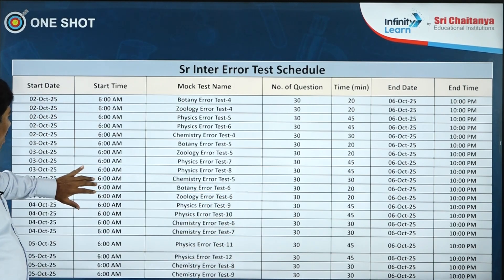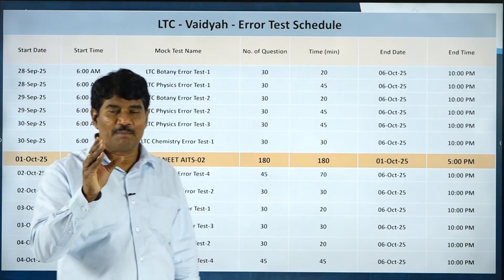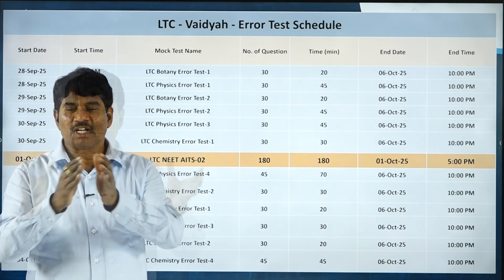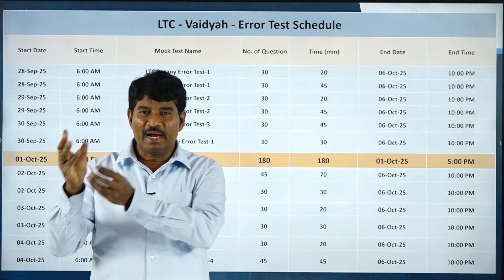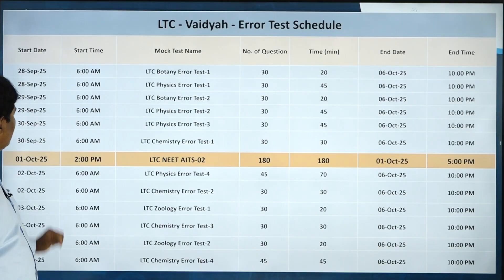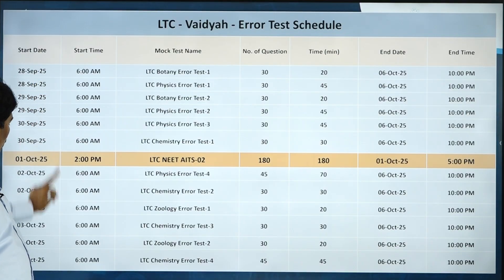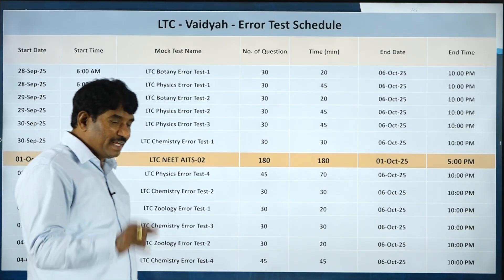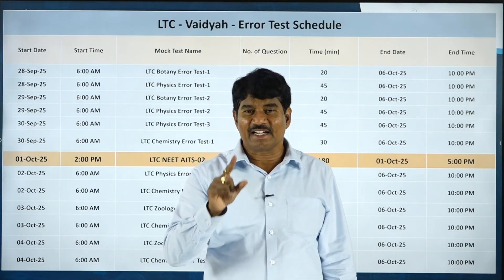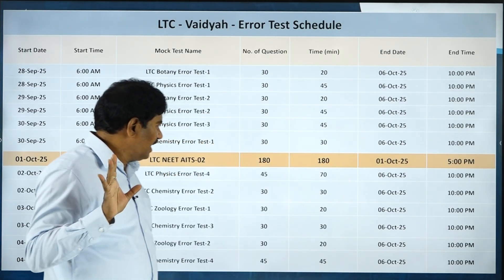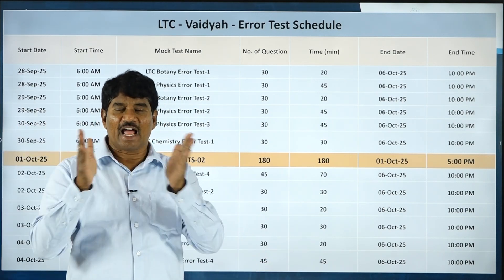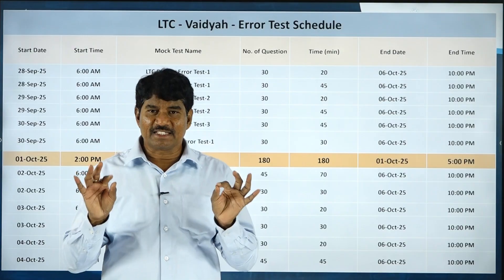Similarly, for the long-term stream — the repeaters batch also — we have picked out the most common errors and made questions similar to those errors, and we are conducting the test for long-term students too. From 28th September to 4th October, and even for long-term students, Sri Chaitanya's NEET All India Test Series will be conducted on 1st October, with the test time fixed at 2 PM to 5 PM.